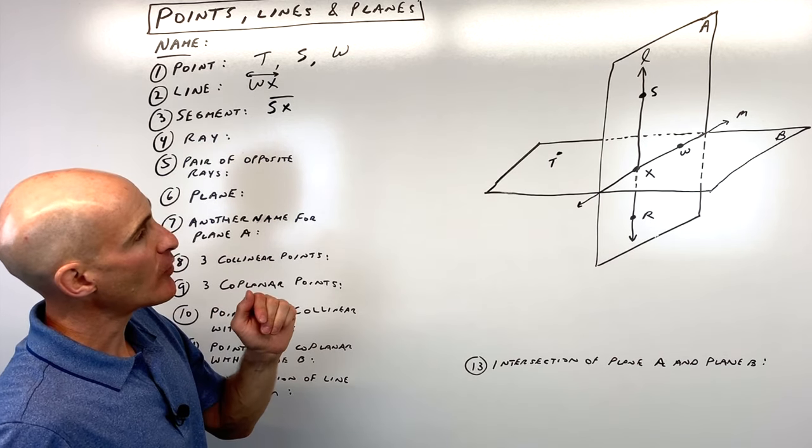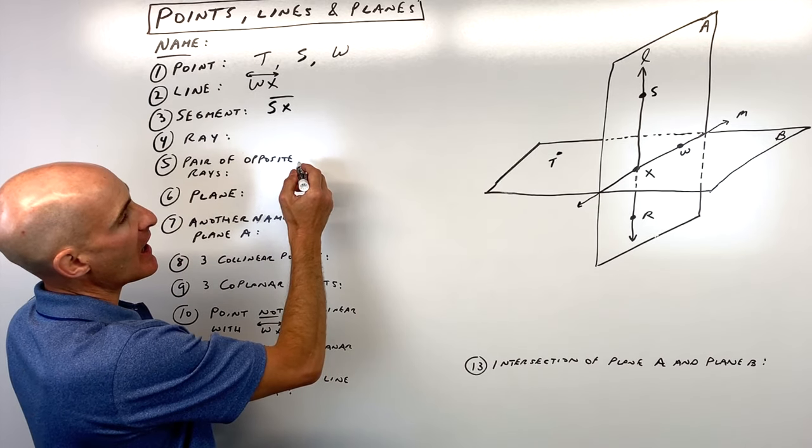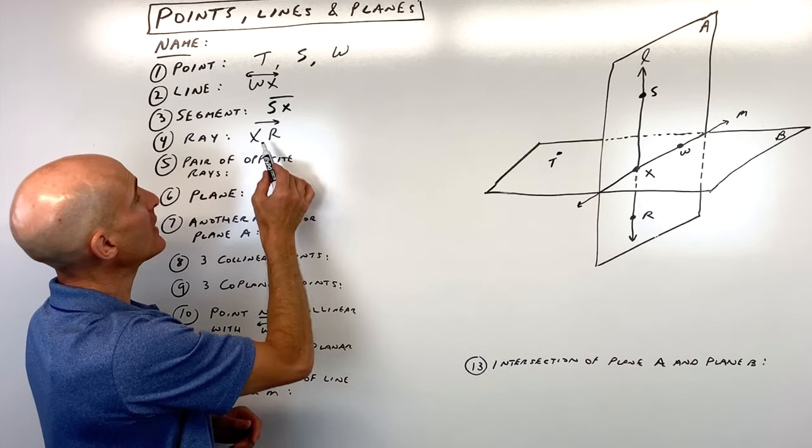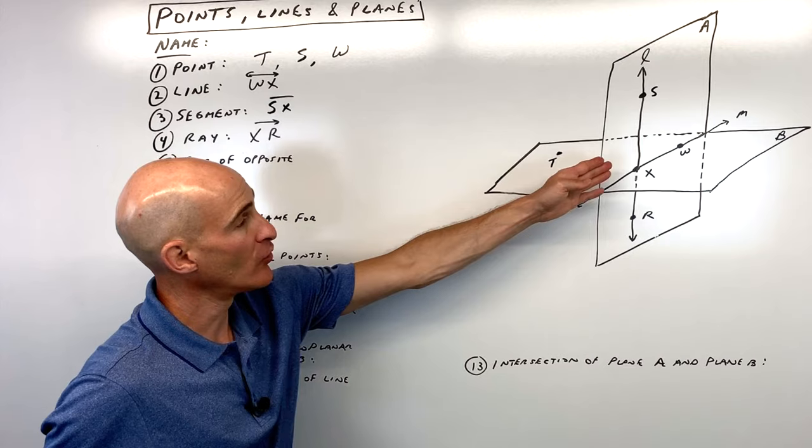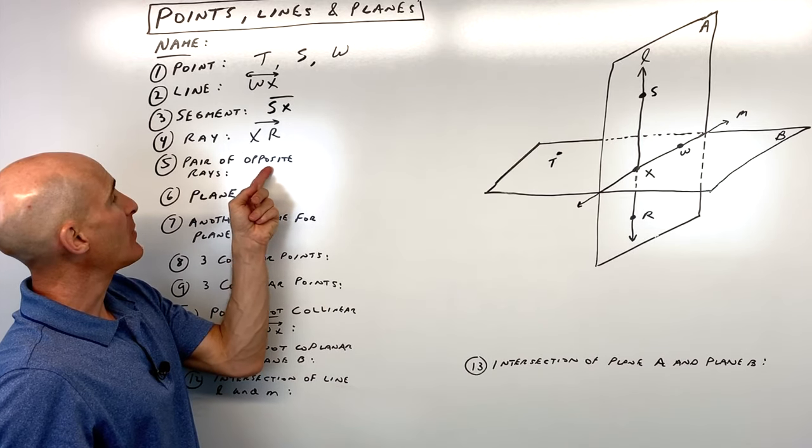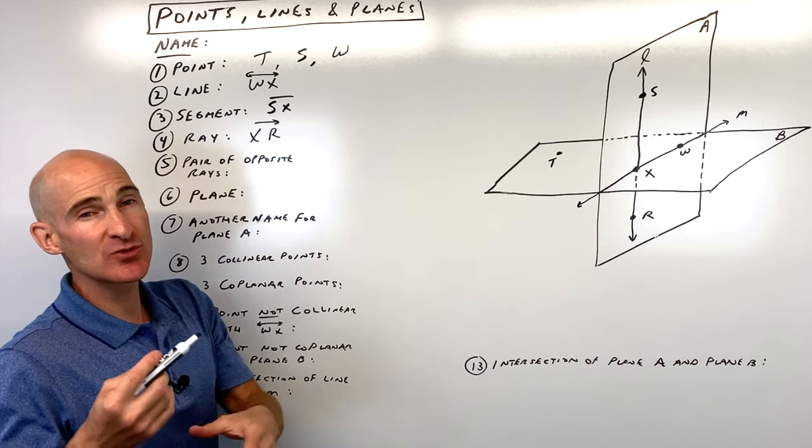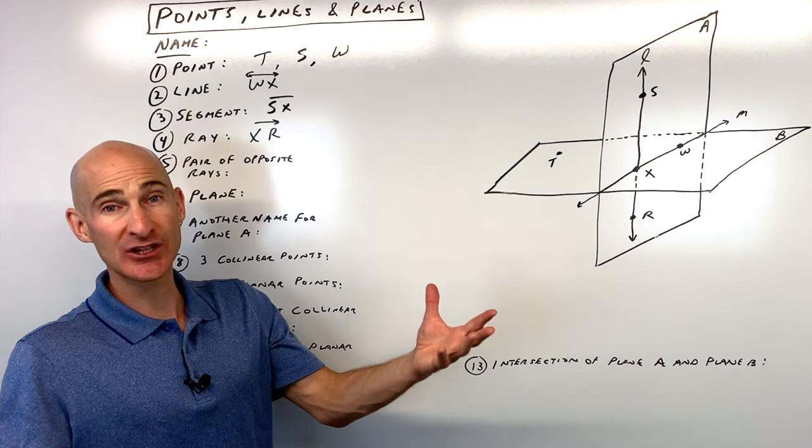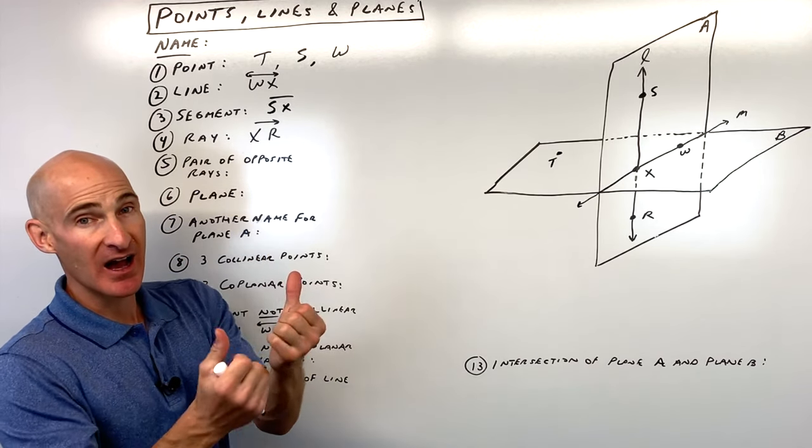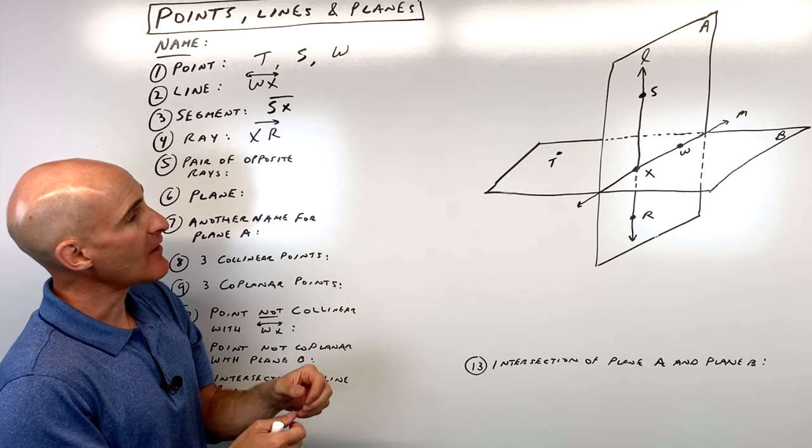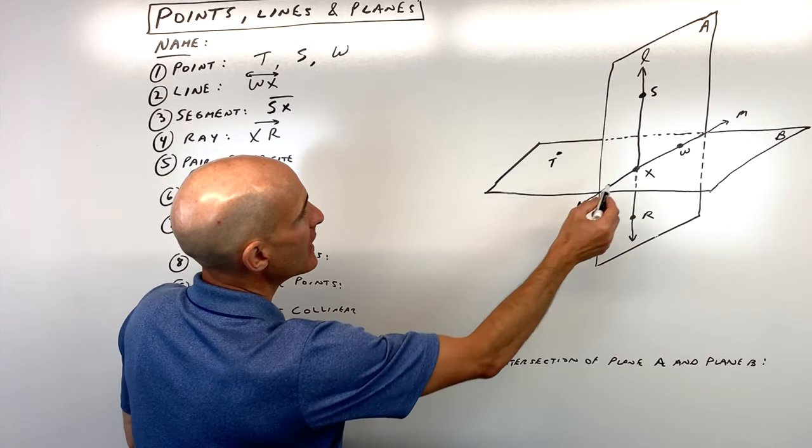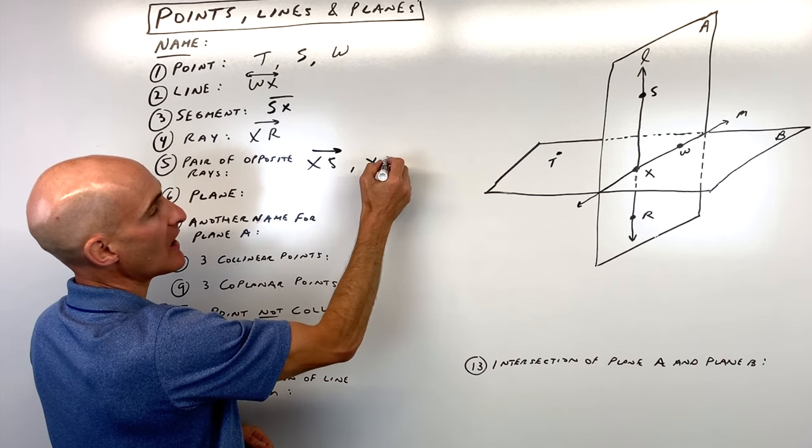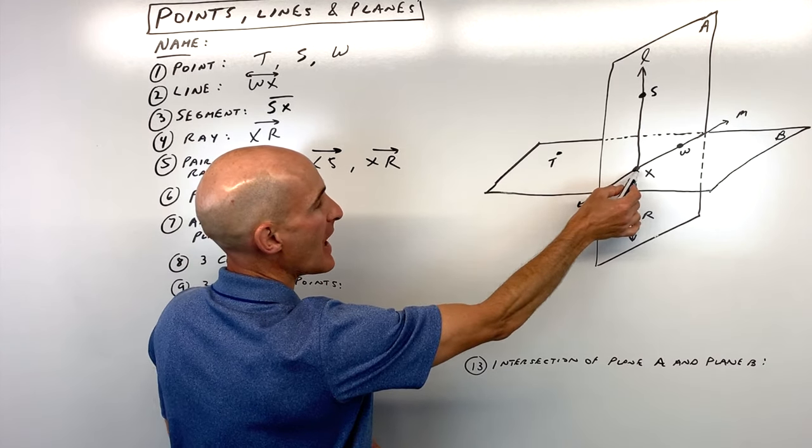For number four, a ray. What do you think a good example of a ray would be? I'm going to say ray XR. So that means it's starting at X. It's going towards R and it keeps going. Notice how that symbol is going to the right, even though the ray is going downward. For number five, a pair of opposite rays. Now, a lot of times when you're doing these problems, if you look at the words very carefully, it'll tell you what it is. Like pair, that means like a pair of shoes, like two. Opposite, right? So we're thinking 180 degrees opposite rays. So a pair of opposite rays, a good example would be something like XS and XR. So we could say X going towards S and keeps going, X going towards R and keeps going, but they have that same endpoint. Endpoint, you can think of as the starting point, but they're going 180 degrees opposite and forming a line.